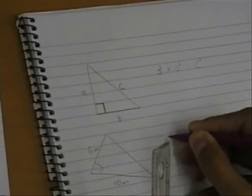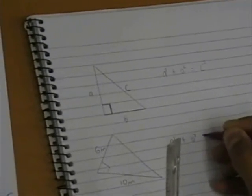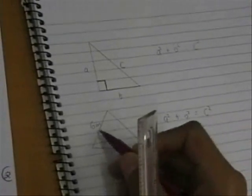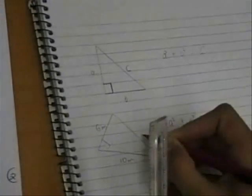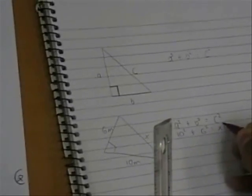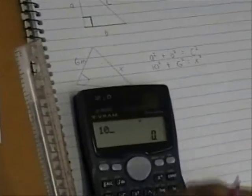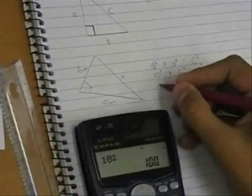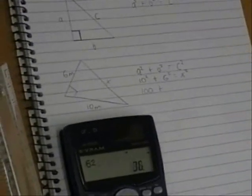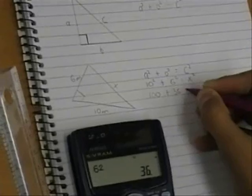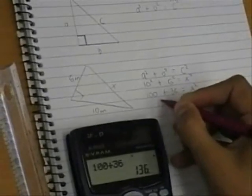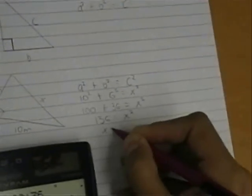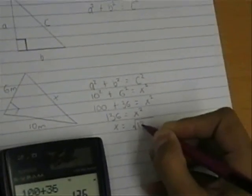So a squared plus b squared equals c squared. A and b, 10 squared plus 6 squared equals, let's label this x, x squared. So x squared equals 136. So x must equal the square root of 136.